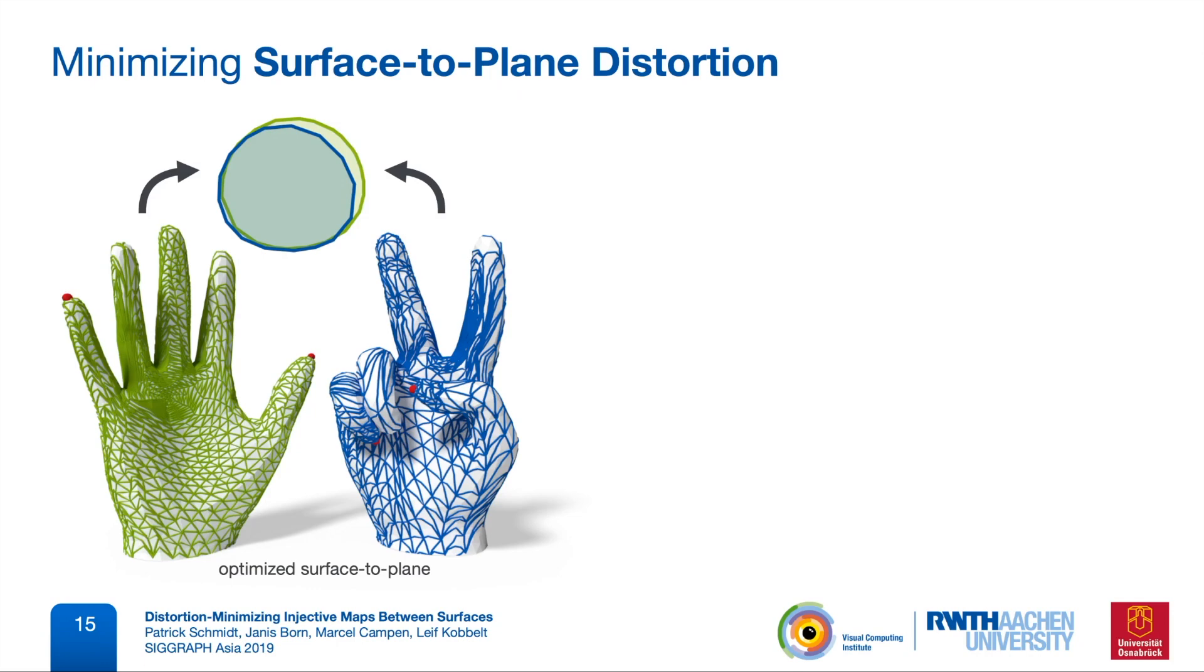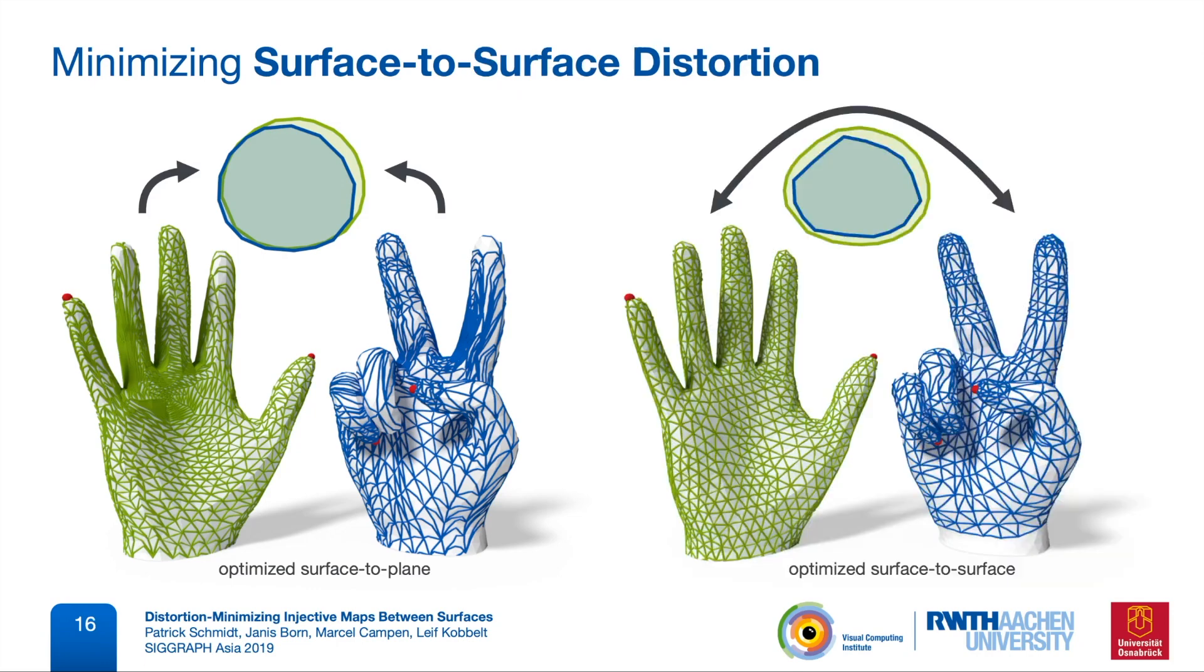In contrast, if we optimize for distortion directly between the two surfaces, we call this an end-to-end distortion measure, then this incentive does exist and the fingers align nicely, because this results in lower distortion.